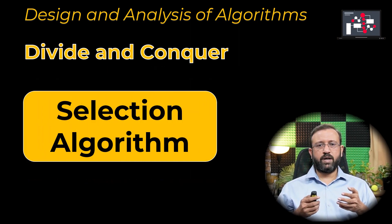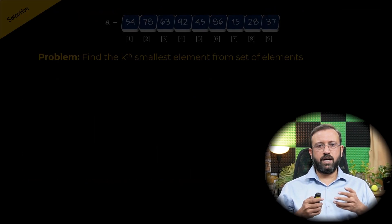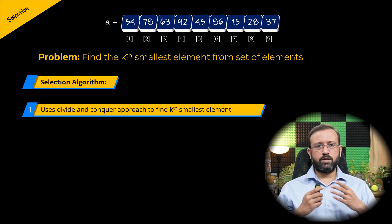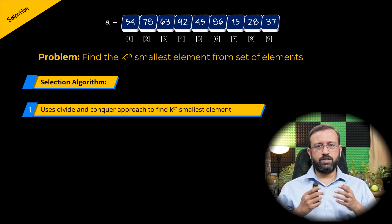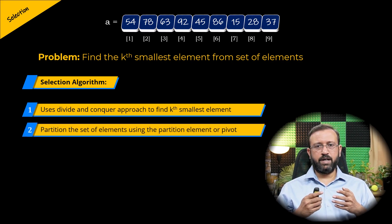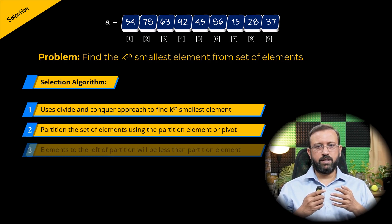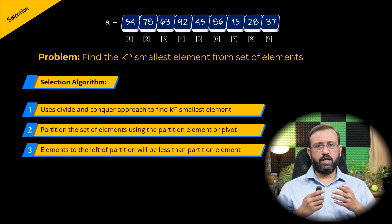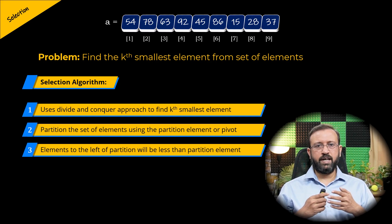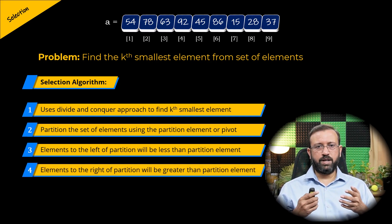In this video we will look at the selection algorithm. This algorithm uses the divide and conquer approach to find the k smallest element from a set of elements. The idea behind the selection algorithm is to partition the set of elements using a partition element, such that the elements to the left of the partition will be less than the partition element and the elements to the right will be greater than the partitioning element.